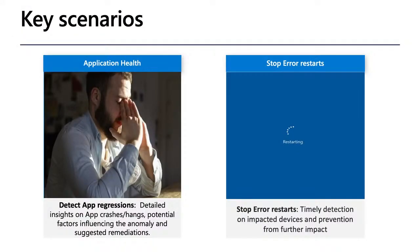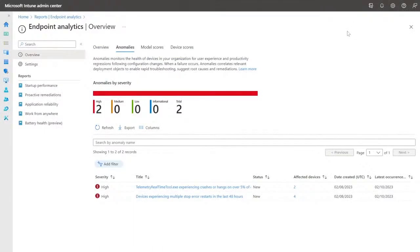The key scenarios we've focused on as part of advanced endpoint analytics include app crash and app hang, potential factors influencing the anomaly, and suggested remediation. The other key scenario is around stop error restarts — timely detection on impacted devices and prevention from further impact. Looking into the actual working of both these features together is what this demo is all about.